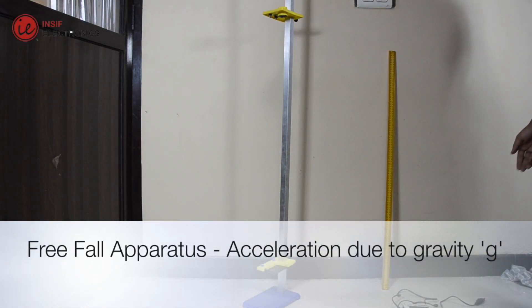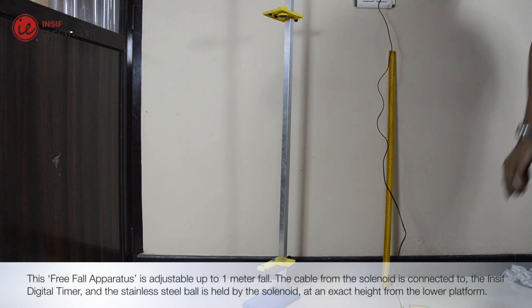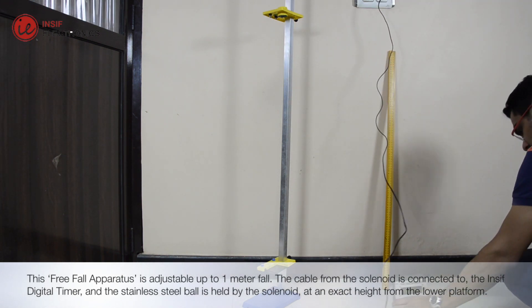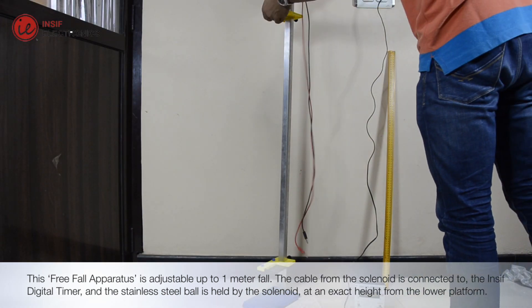This free-fall apparatus is adjustable up to 1 meter fall. The cable from the solenoid is connected to the in-sief digital timer, and the stainless steel ball is held by the solenoid at an exact height from the lower platform.